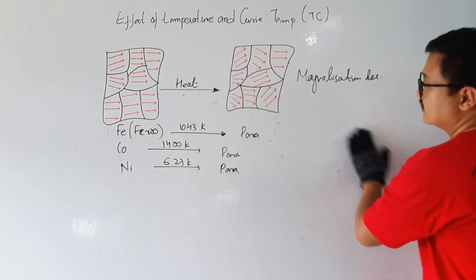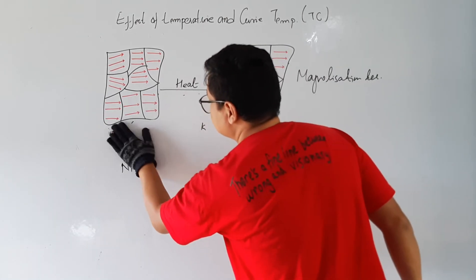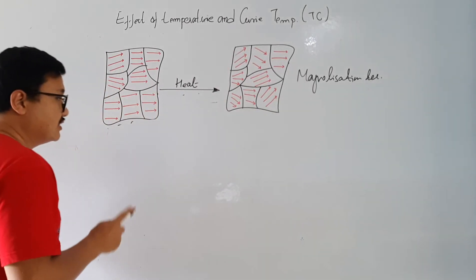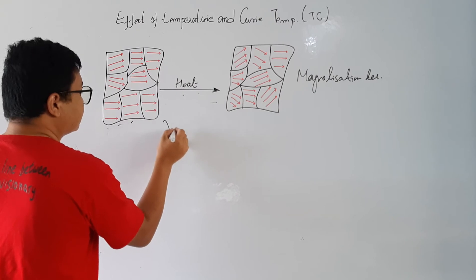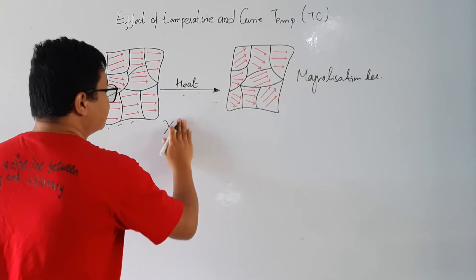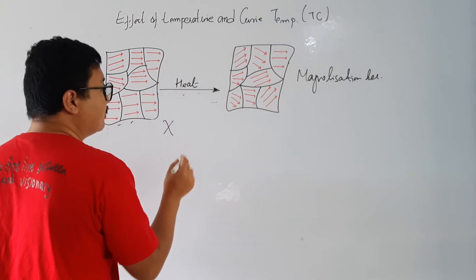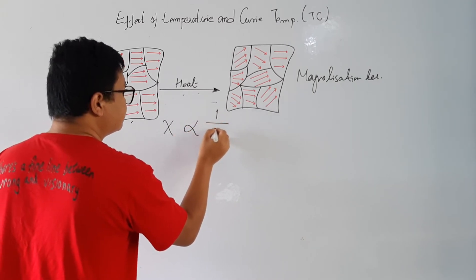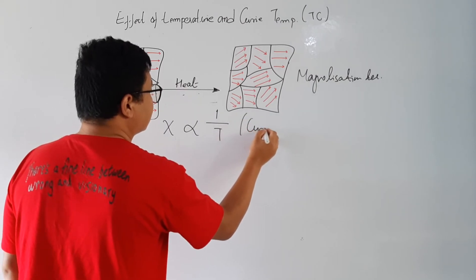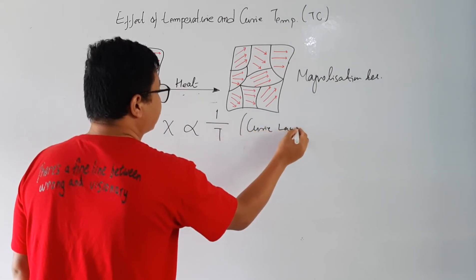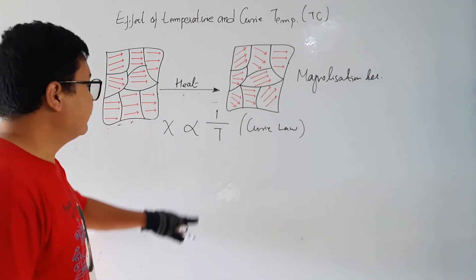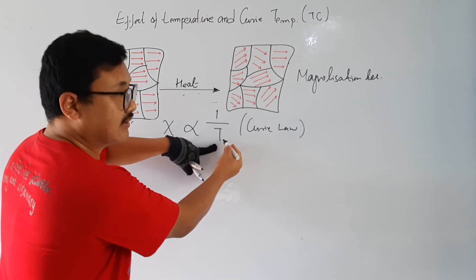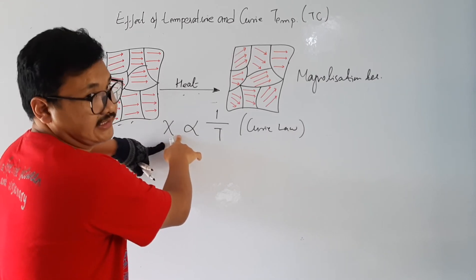Now let us see this from the mathematical part. We know that chi — the magnetic susceptibility — is inversely proportional to T, i.e., χ ∝ 1/T. This is called the Curie law. What this means is that whenever we increase the temperature, the susceptibility will decrease.